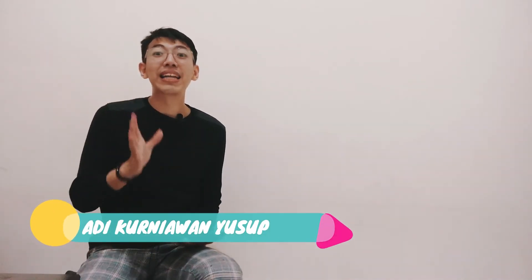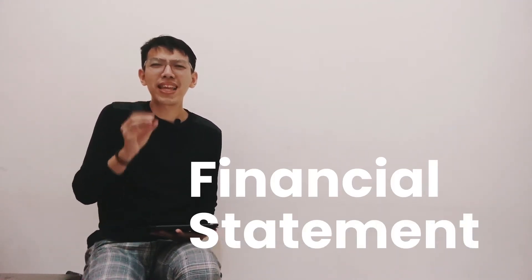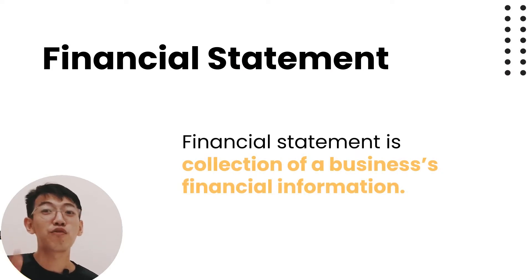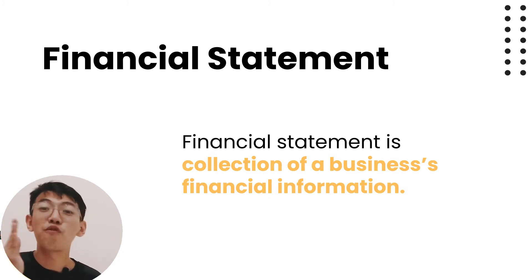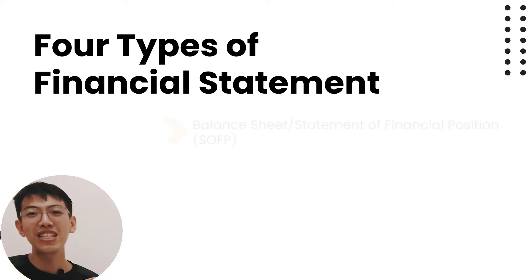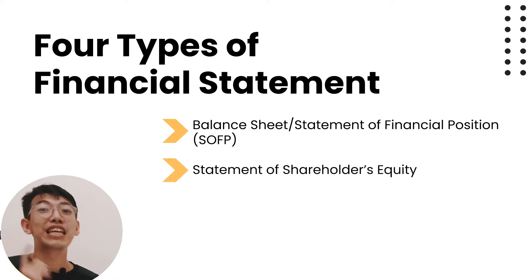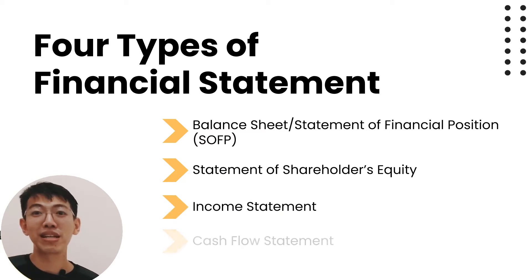Hi guys, it's me again, Aji Kurniawan Yusuf, and in this video we're going to talk about financial statements. Some of you may think that talking about financial statements is something complicated — no, I'll try to explain it in the most simple way I can. A financial statement is a collection of business financial information. There are four types: balance sheet, statement of shareholder equity, income statement, and cash flow statement.